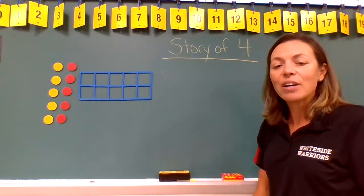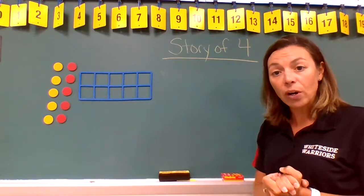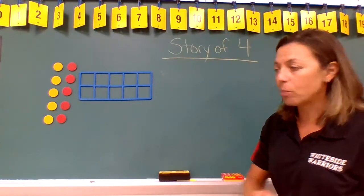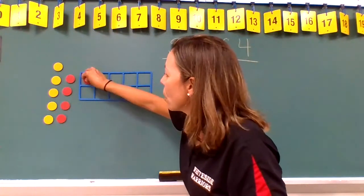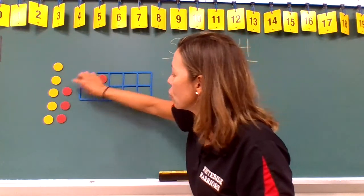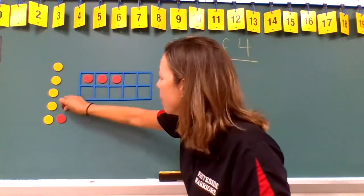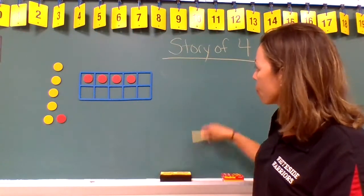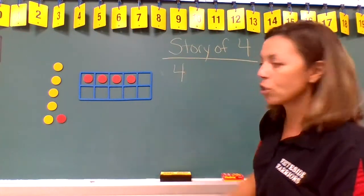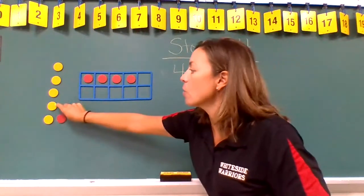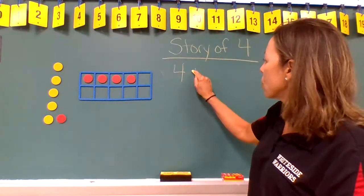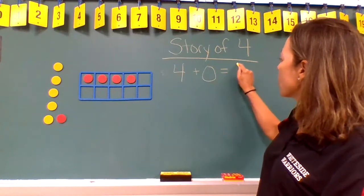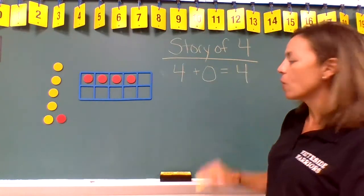Welcome back. We're going to start with the story of four — the different ways of making a four — and we're going to use our red counters to help us out. We're going to start by taking one, two, three, four red counters. So we have four red counters but zero yellow counters. Four red counters plus zero yellow counters equals four.